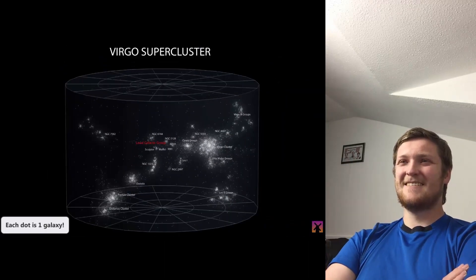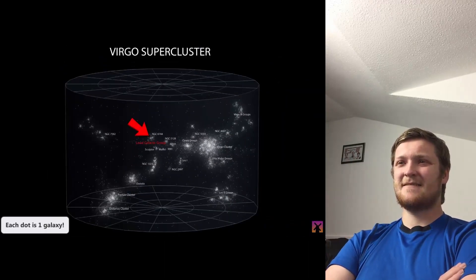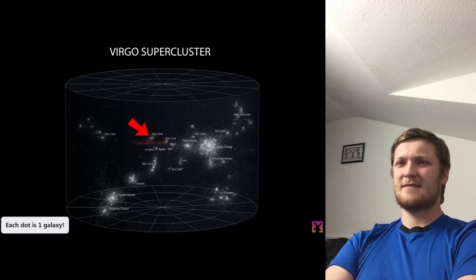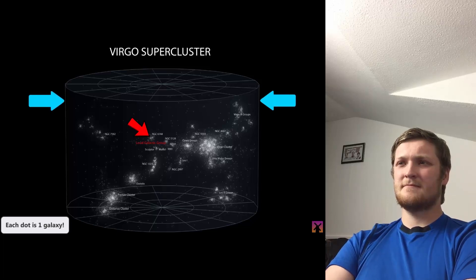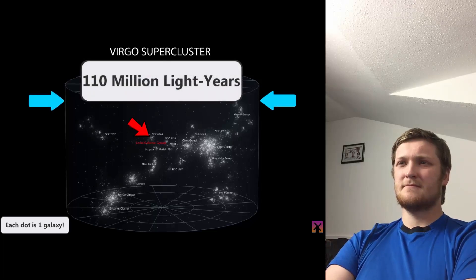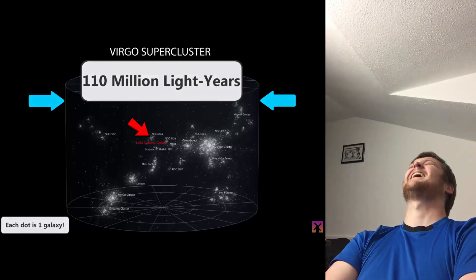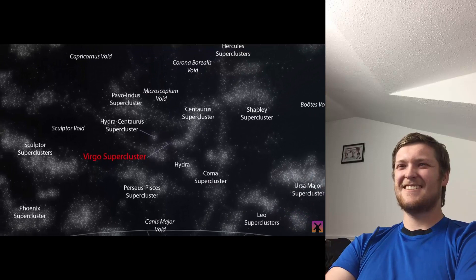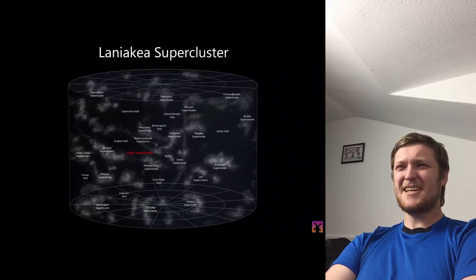And we can see the Virgo supercluster, of which the local group is just a tiny segment. There are at least 100 other groups of galaxies just like our own local group inside of here, and the distance from one side to the other is a mind-numbing 110 million light years. But even the massive Virgo supercluster is nothing but a quiet and tiny lobe.